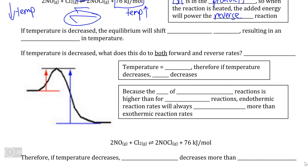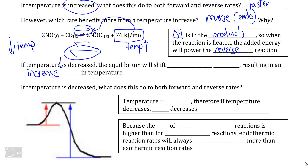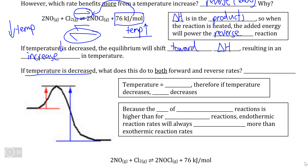Temperature decreases are significantly easier to understand. Again, using the philosophical maxim: if temperature is decreased, the equilibrium will try to increase temperature to reverse that change, by shifting toward delta H. If we decrease temperature, the equilibrium wants to get the temperature back up, meaning it will do more of the exothermic reaction to produce more energy. Let's talk about rates to understand why.